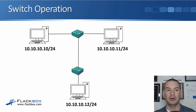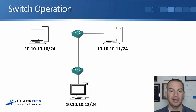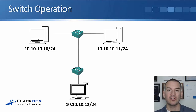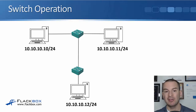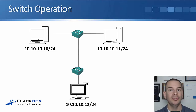Let's have a quick recap of switch operation. In the diagram, we've got a building with a couple of switches. All our hosts are on the 10.10.10.0/24 network. When that's the case, they can all communicate with each other through the switches. When they're all on the same IP subnet, there's no need to have a router.